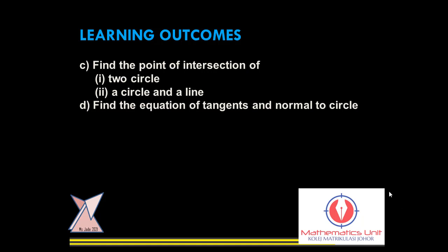Based on the learning outcome, we have to focus on these two. First, finding points of intersection. The point of intersection is divided into two cases: between two circles, and between a circle and a line. Next, we are going to find the equation of tangent and normal to a circle. Are you ready? Let's go.